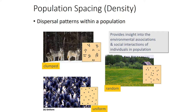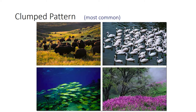Which spacing pattern is most common? If you said clumped, you are correct. Clumped spacing patterns are a result of the uneven distribution of resources — resources are not randomly dispersed through the environment.